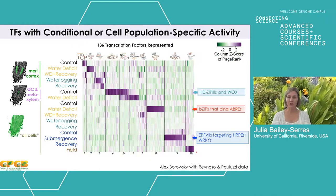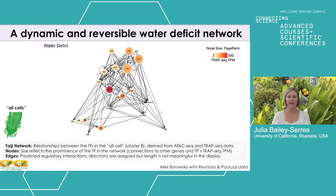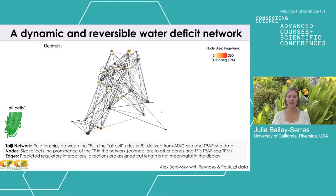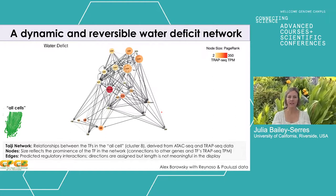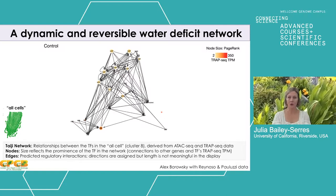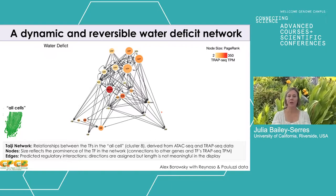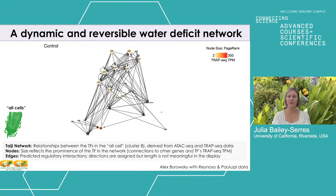To show an example of a transcription factor network built from the water deficit data — control, water deficit, and water deficit recovery — focusing on bZIPs in cluster eight: this GIF illustrates the activity and relationships between transcription factors under these three conditions. The size of the circle labeling shows the predominance of bZIPs and one HD-zip in this cluster and their relationships with other transcription factors. Each edge is directional, building a network from one transcription factor to the next, showing incredible dynamics between the three conditions.